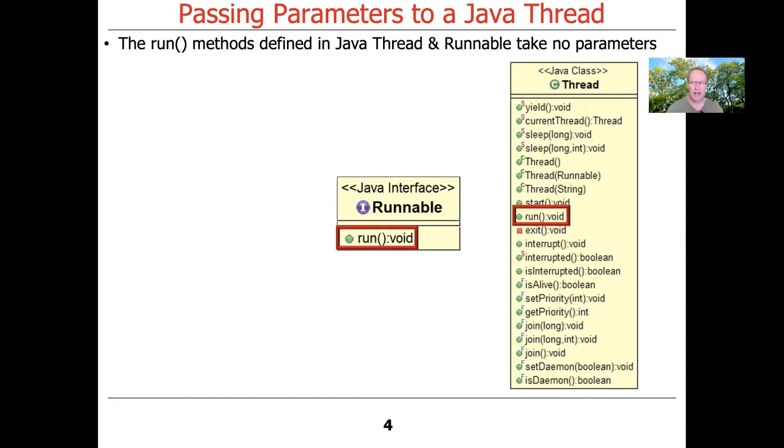So at first, you might be like, well, how the heck do I pass parameters to a thread if I can't pass any parameters to run? Why isn't there a var args parameter, for example?